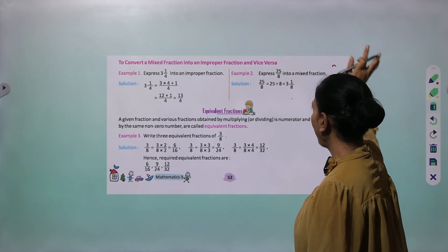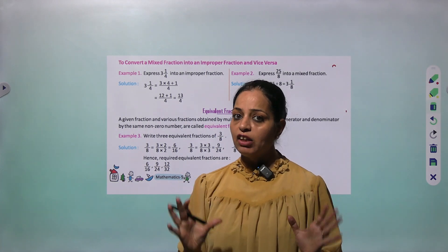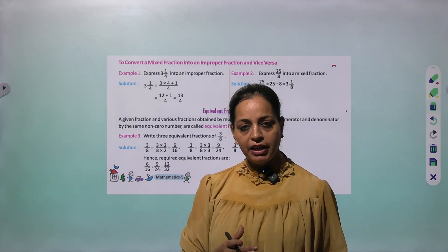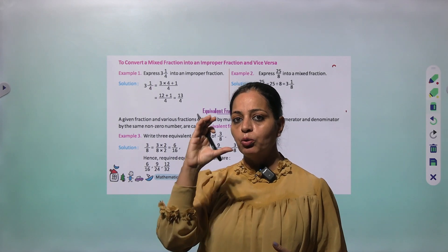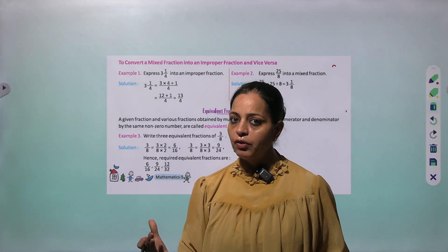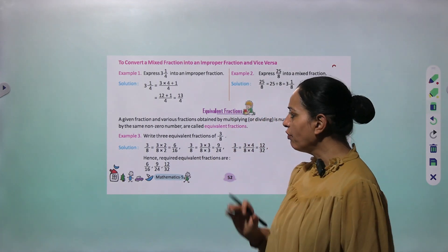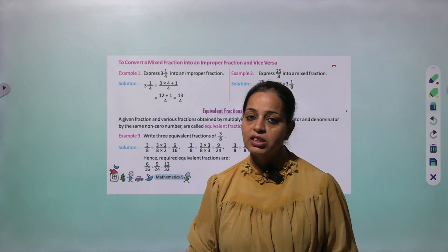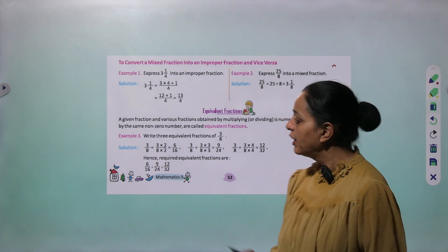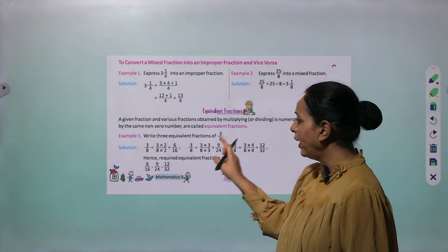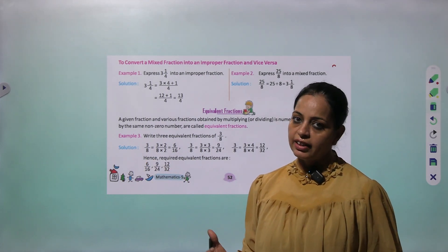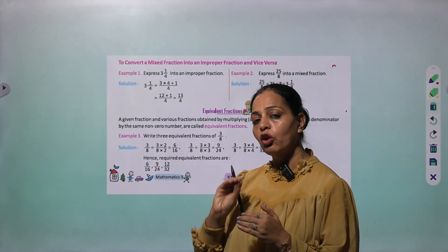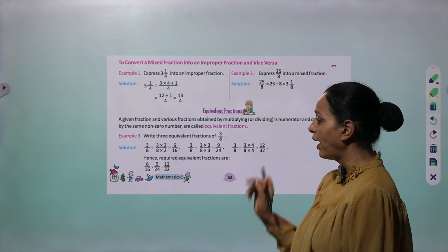Now let's look at equivalent fractions. Equivalent fractions means equal fractions. To find equivalent fractions, we multiply or divide the numerator and denominator by the same non-zero number. A fraction and various fractions obtained by multiplying or dividing its numerator and denominator by the same non-zero number are called equivalent fractions. Example 3: Find equivalent fractions of 3 by 8. Multiply by 2 — numerator 3 times 2 gives 6, denominator 8 times 2 gives 16. So 6 by 16 is one equivalent fraction.